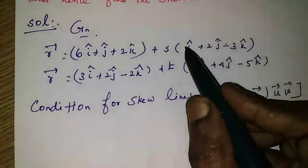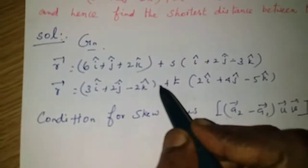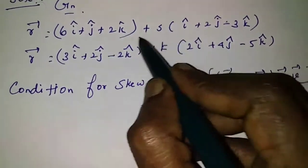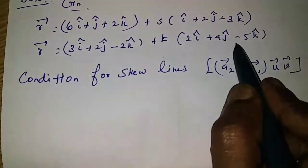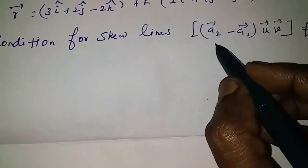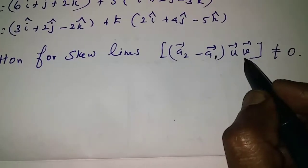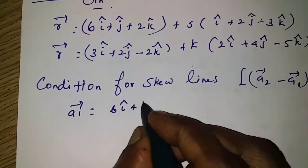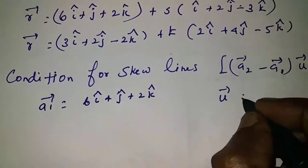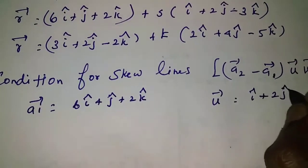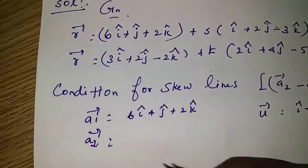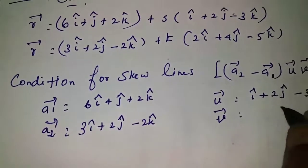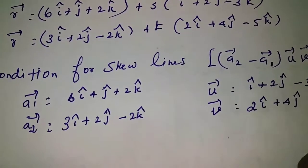Given two lines are in the form R vector equal to a1 vector plus s times u vector, and R vector equal to a2 vector plus t times v vector. The condition for skew lines is that the scalar triple product of (a2 minus a1), u vector, v vector is not equal to 0. Here, a1 vector equals 6i-cap plus j-cap plus 2k-cap, u vector equals i-cap plus 2j-cap minus 3k-cap, a2 vector equals 3i-cap plus 2j-cap minus 2k-cap, and v vector equals 2i-cap plus 4j-cap minus 5k-cap.